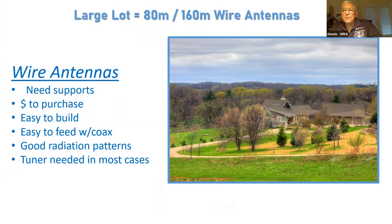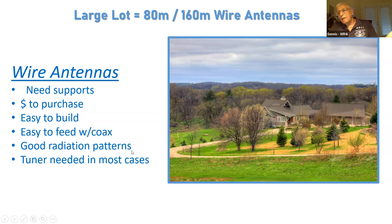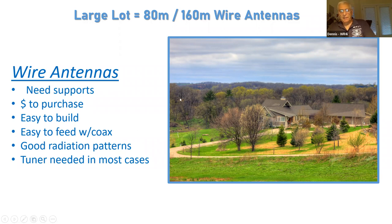Having a large piece of property, you can also put very long wire antennas up — I'm talking about 80 and 160-meter wire antenna arrays. The issue with wire antennas is you need some kind of support. They're very inexpensive to purchase, easy to build, easy to feed with coax. They have good radiation patterns, although they're not as directional as the beams. In most cases you do need a tuner unless they're monobanders, but many of these long wire antennas are able to work on different bands.